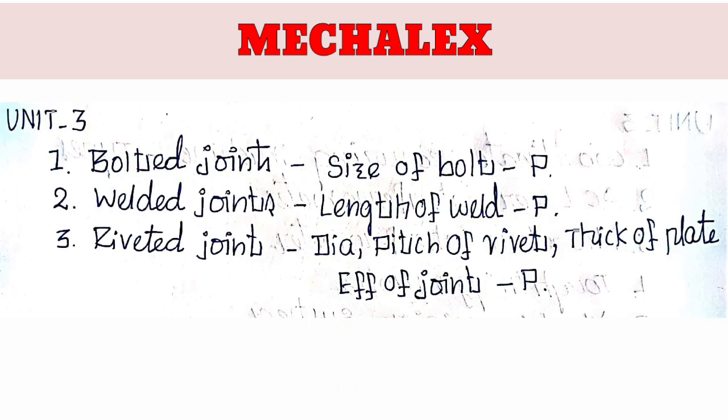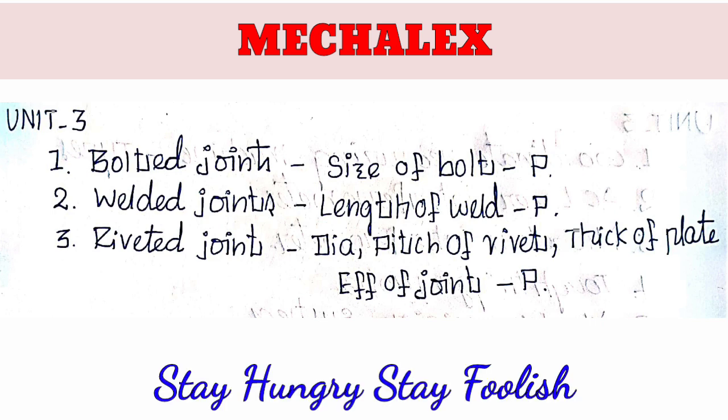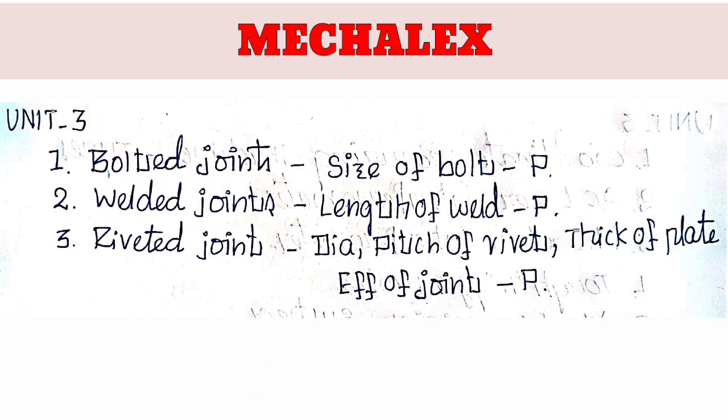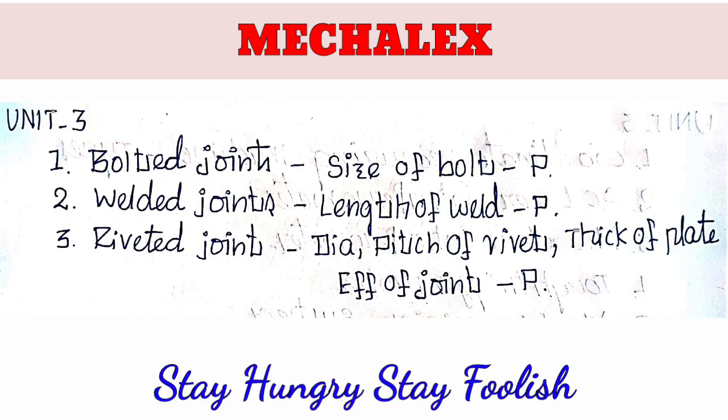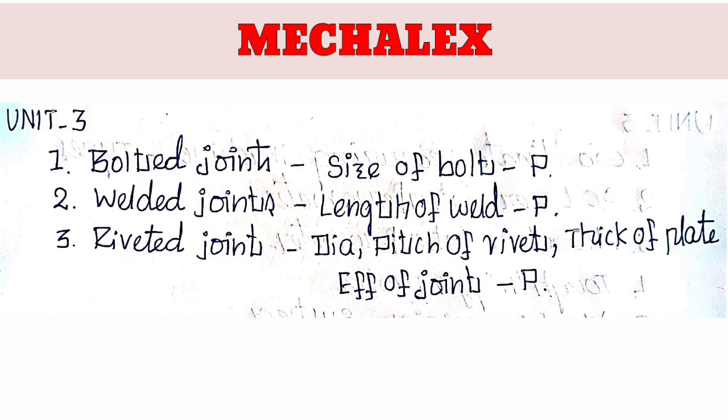Third, there are three topics. First, it's a bolted joint. Second, it's a bolted joint — finding the length of the weld. Third, it's a riveted joint: finding the diameter and the thickness of the plate and the efficiency of the joint.